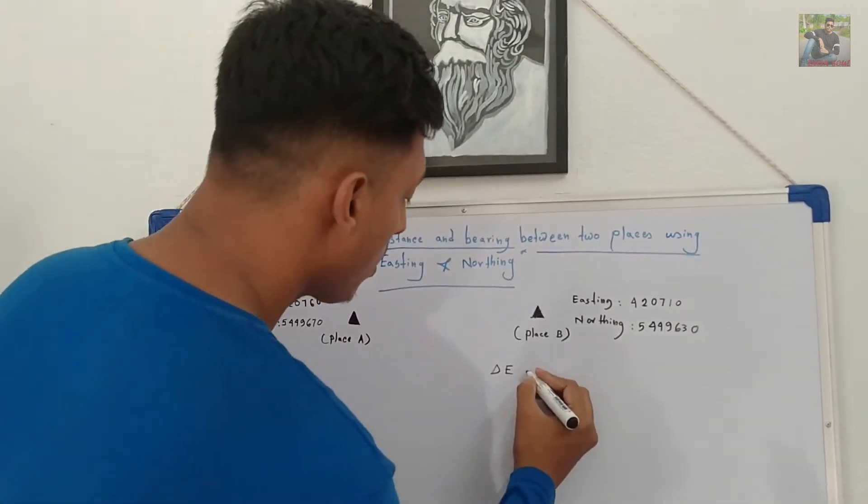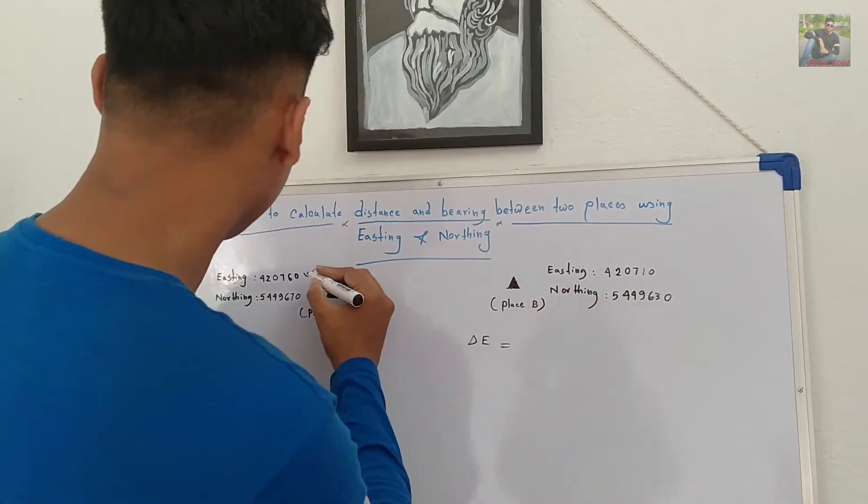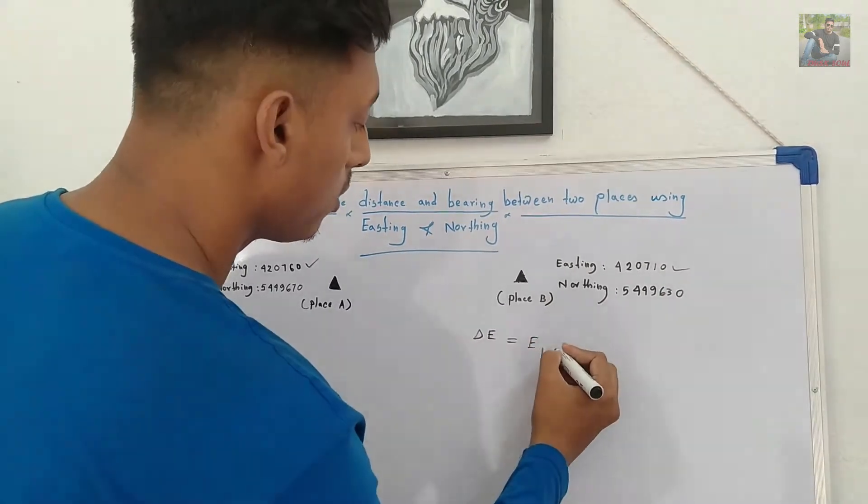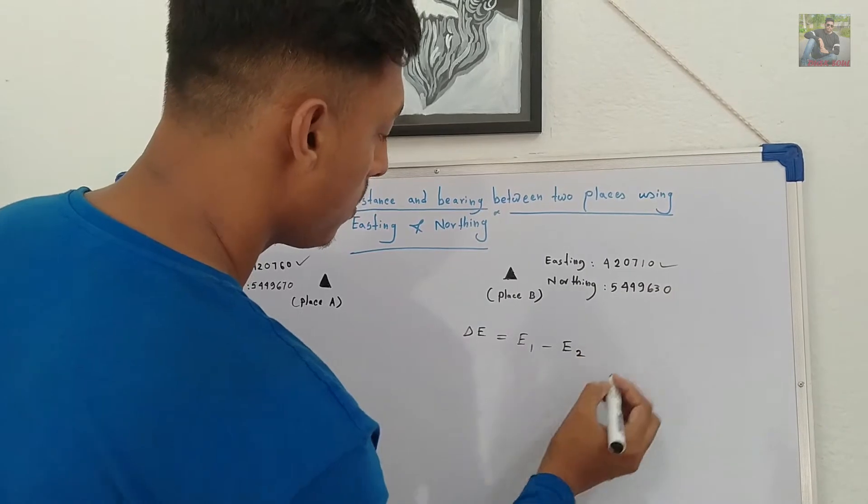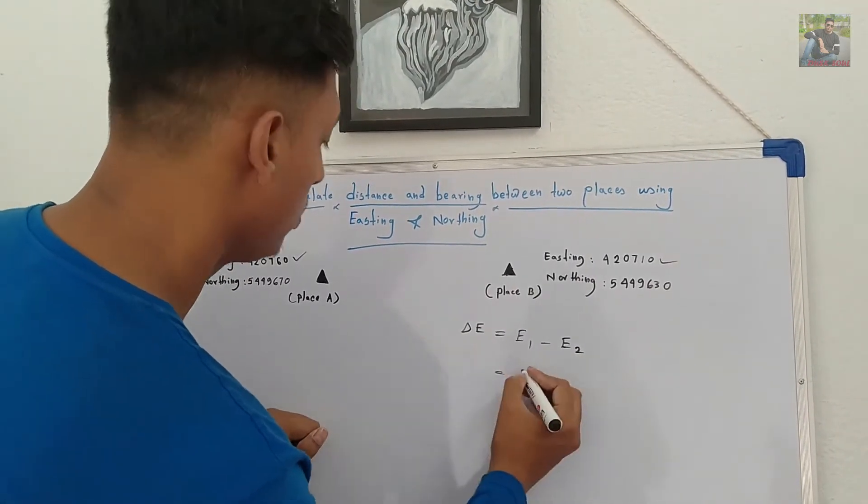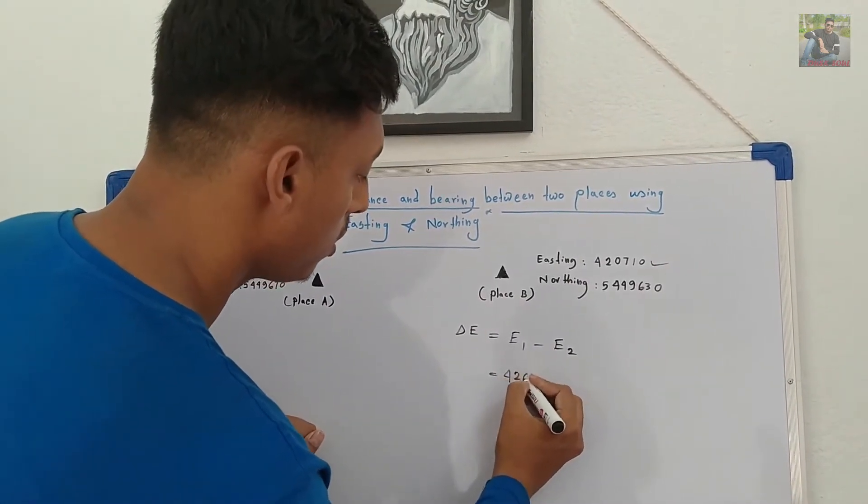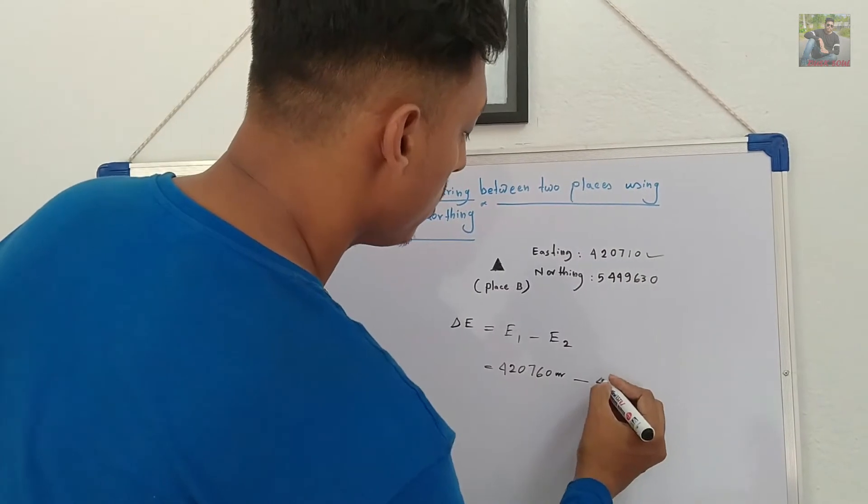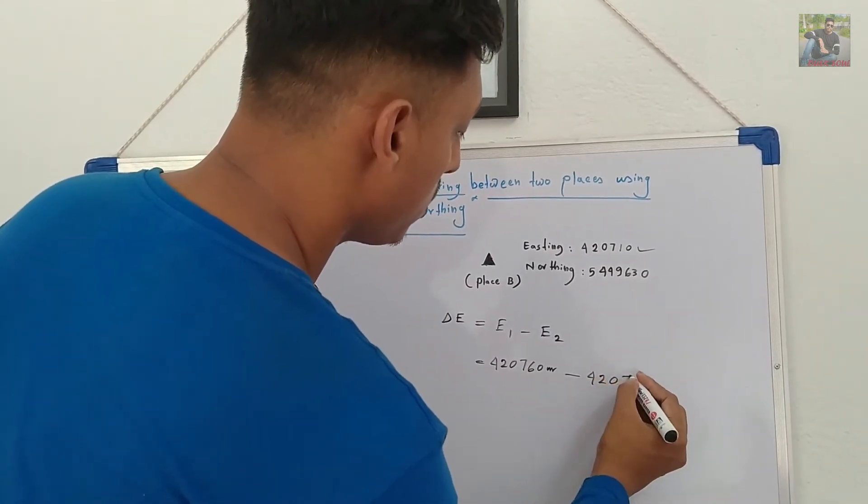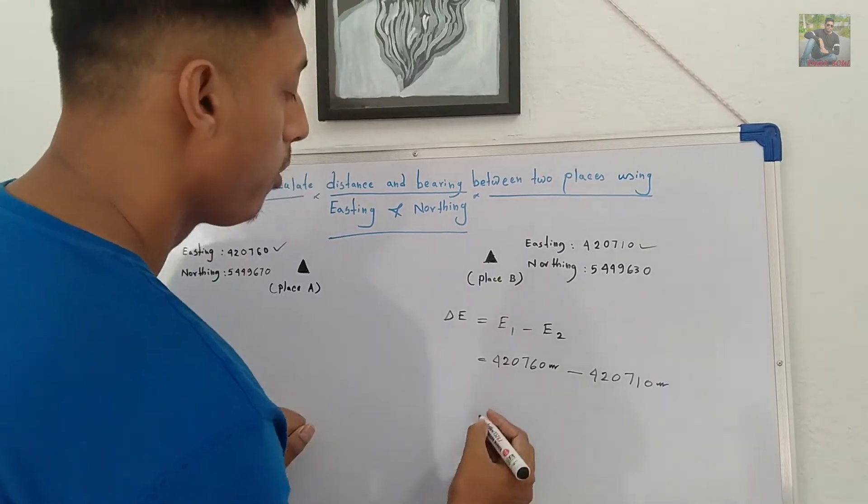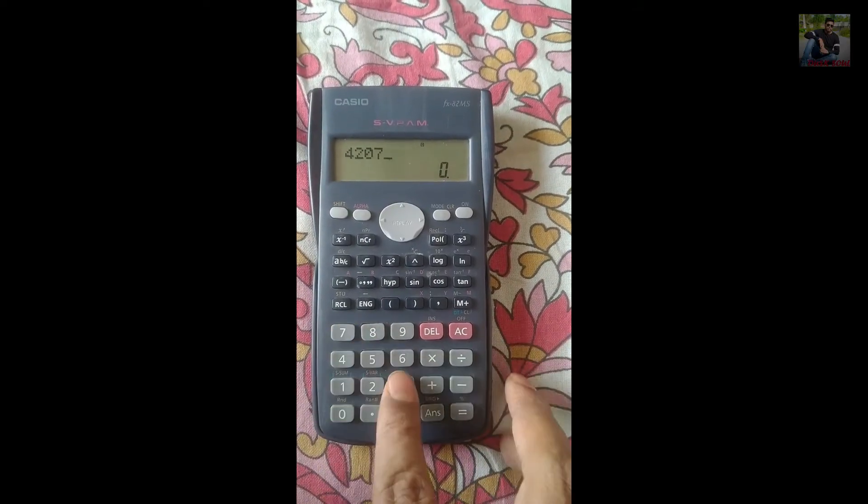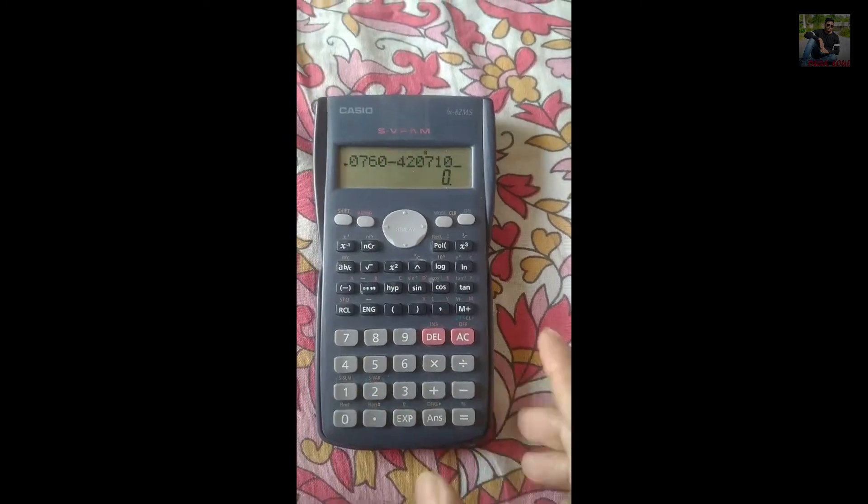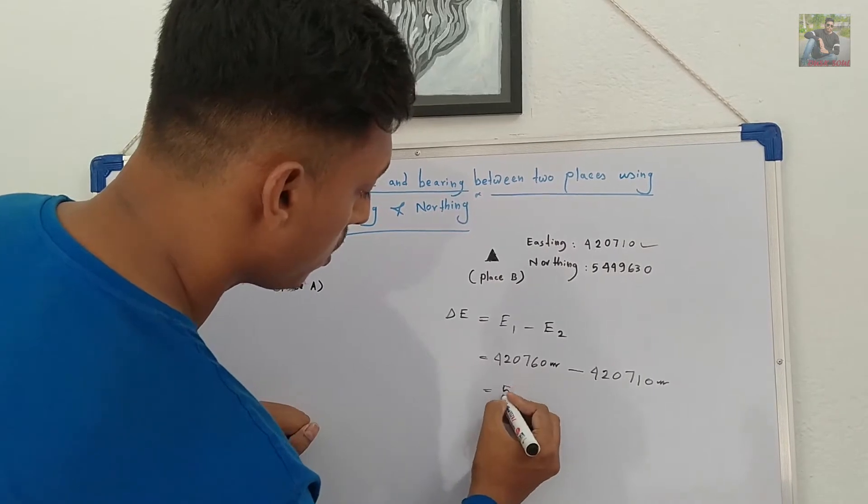Here, I am going to compute delta E. Take easting 1 and subtract it from easting 2. Here, I am inputting the value. Easting 1 is 420760, easting 2 is 420710. And the result is 50 meters.